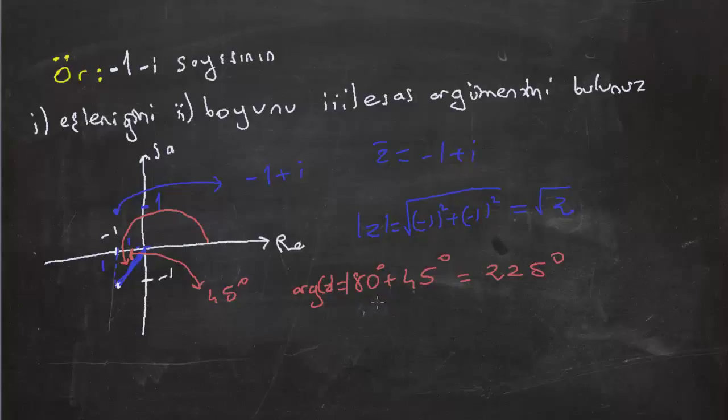Böylece bu sorumuzu da çözmüş olduk. Belki son olarak bir ekleme daha yapalım. Hatırlarsak burada bir eşlenik vardı. Bu eşleniğin de argümentini bulmaya çalışalım. Şimdi bu eşleniğin argümenti şu şekilde ifade edilebilir. Şimdi burası da tabii yine aynı şekilde, burası 45 olduğu için 180 eksi 45'ten hesaplanır. Bu da 135 eder.